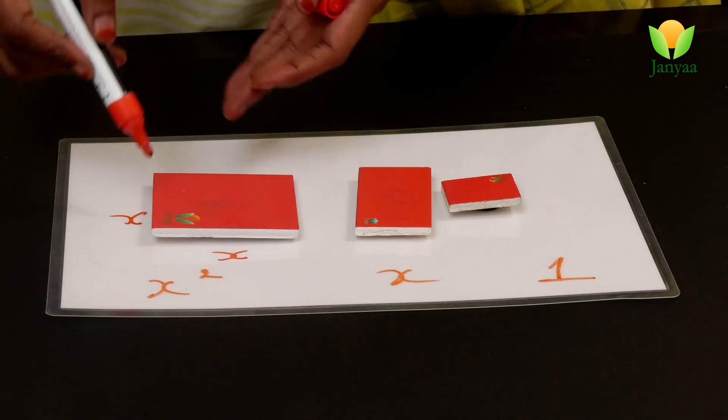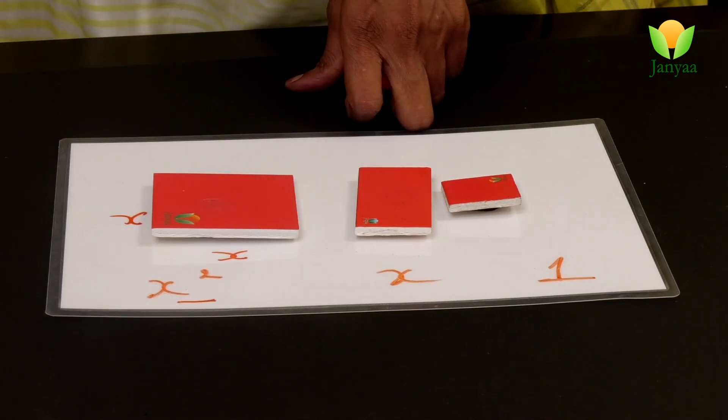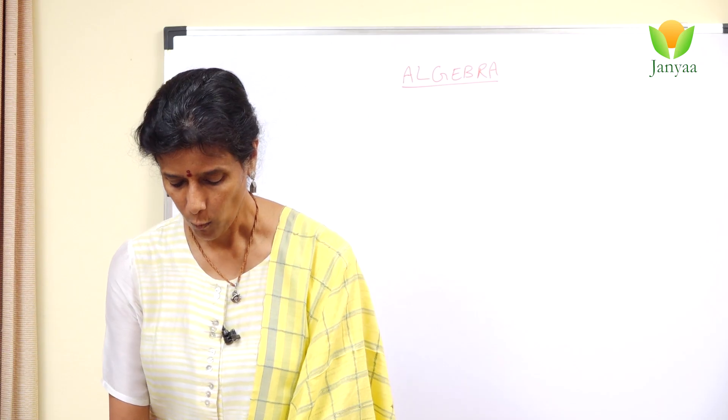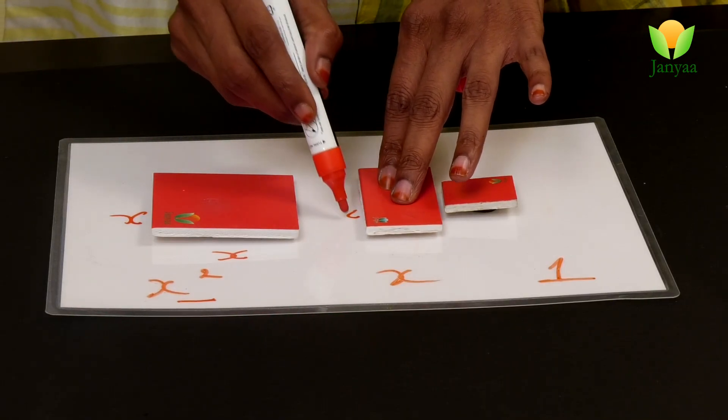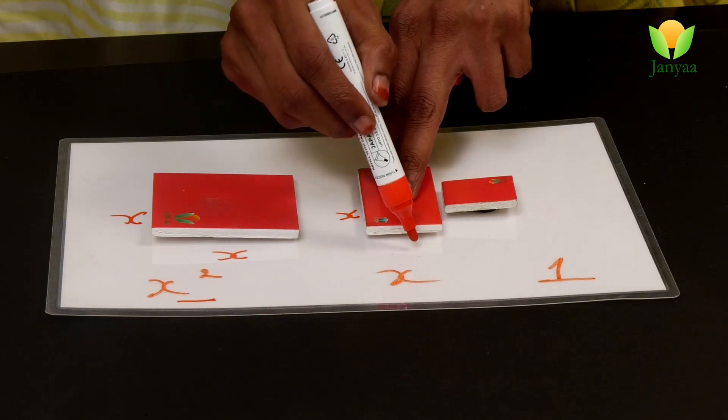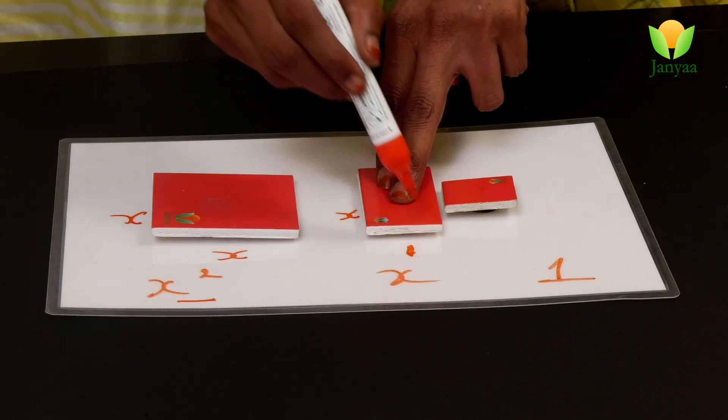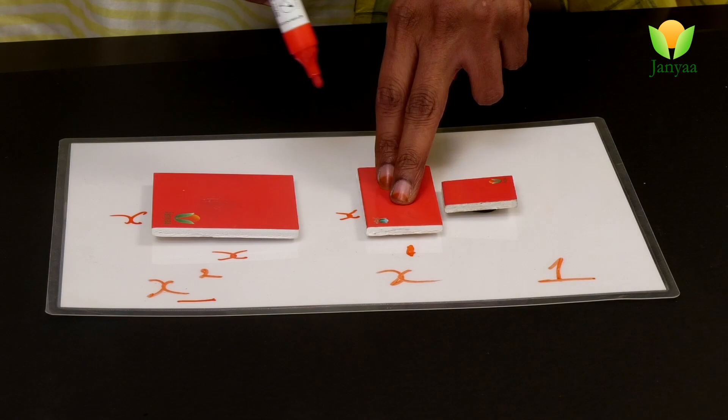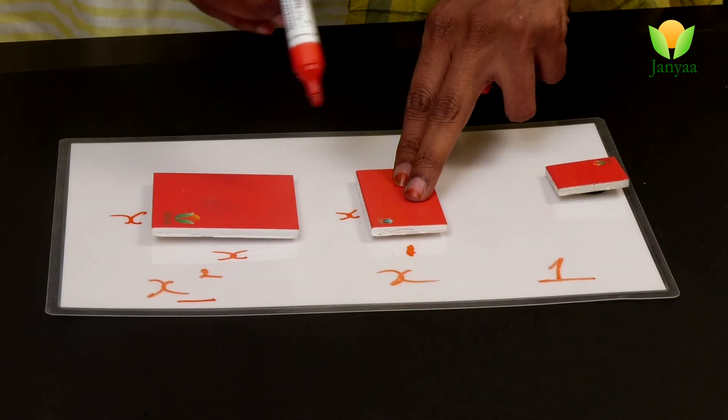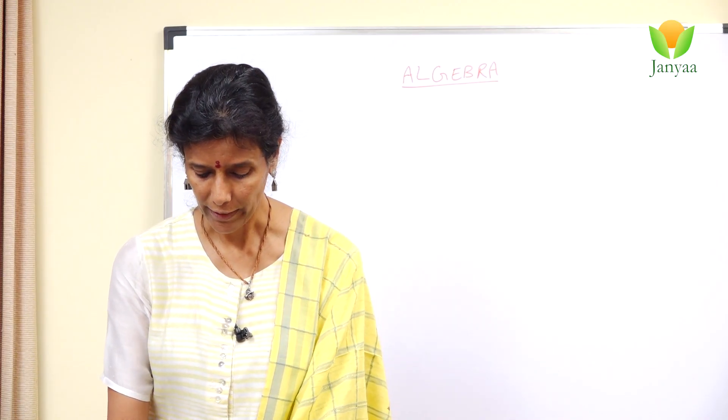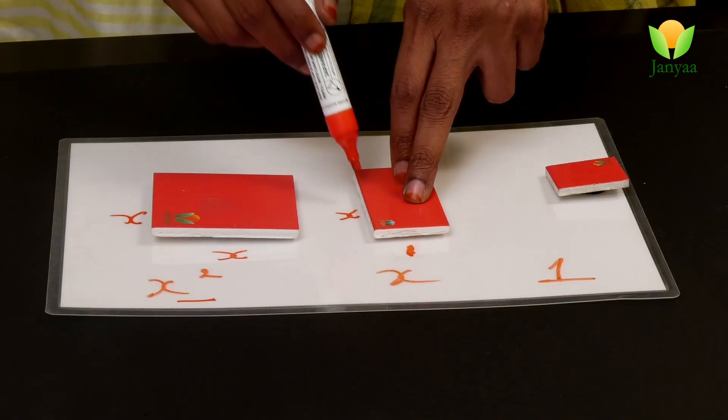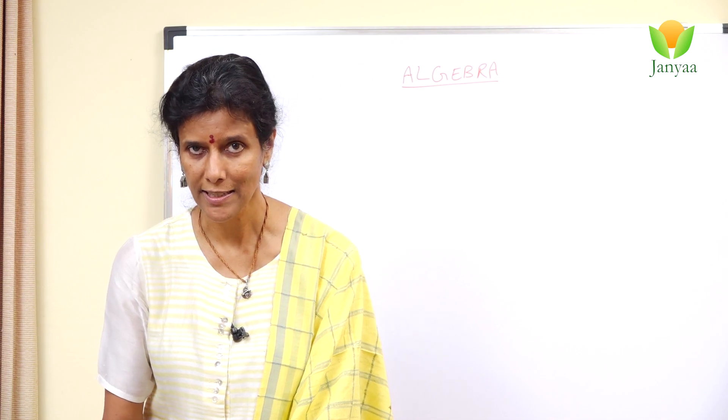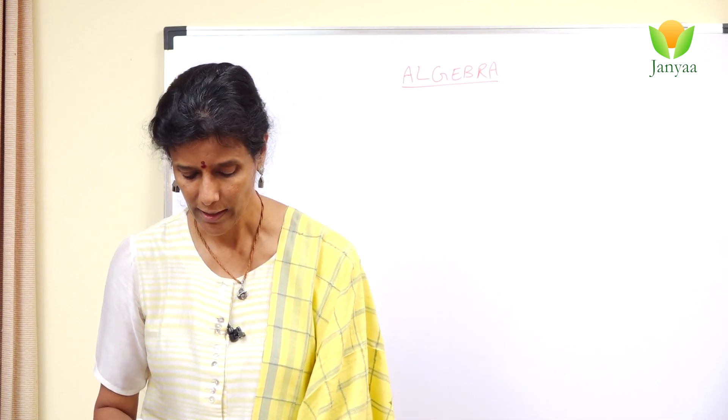Okay, now what is this side? We already see it's equal, right? So this is also x, correct? Now let's call this one a constant. This side measures as one. Now this is a rectangle. What is the area of a rectangle? Length into breadth, correct? Now x into one is x. That's how this whole tile is represented as x.